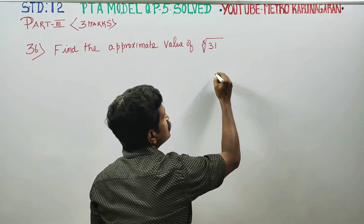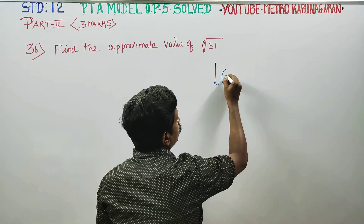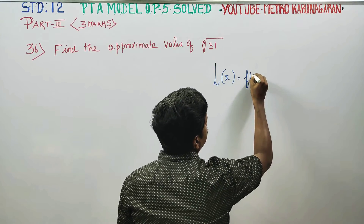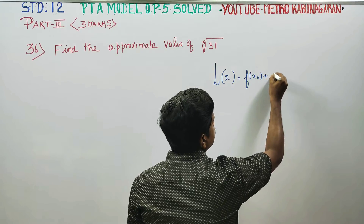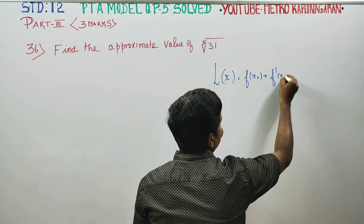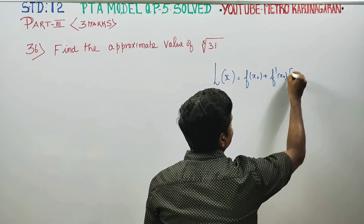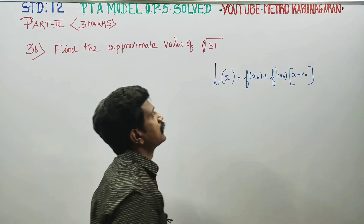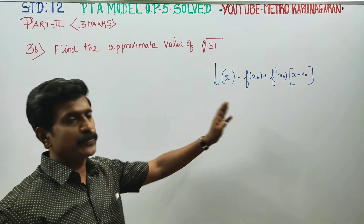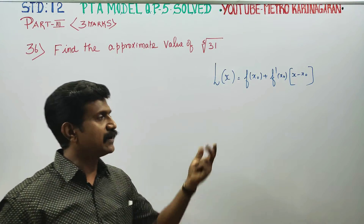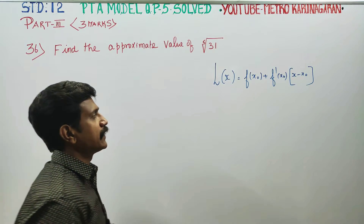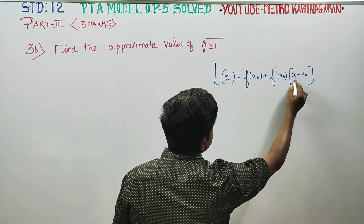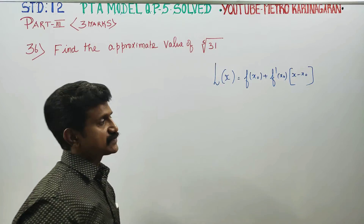To find this value, I am going to use the concept of linear approximation. L of x is equal to f of x₀ plus f dash of x₀ into x minus x₀. This is the linear approximation formula.